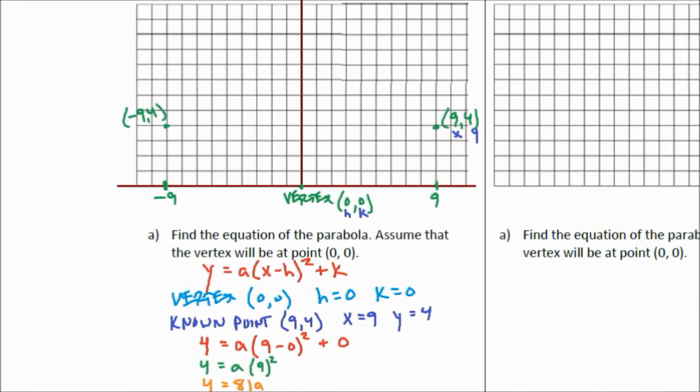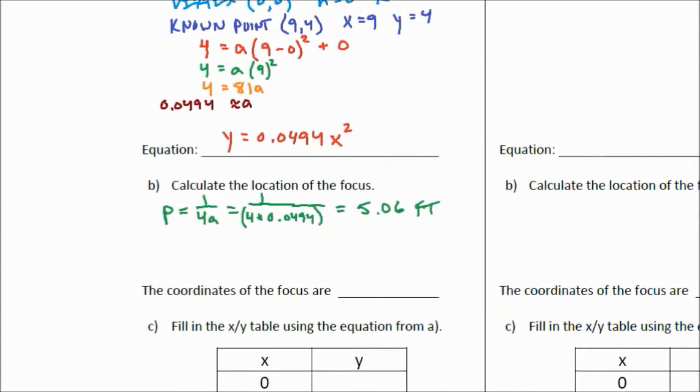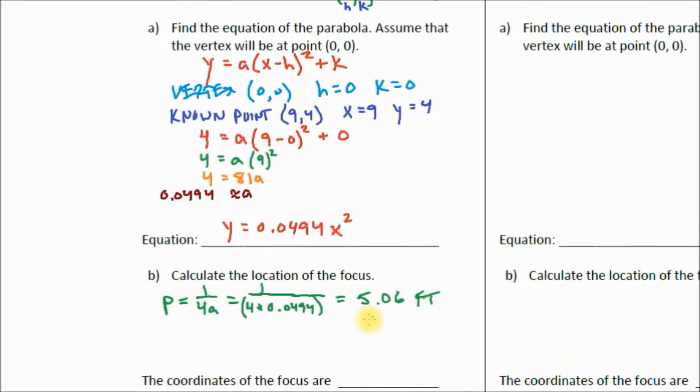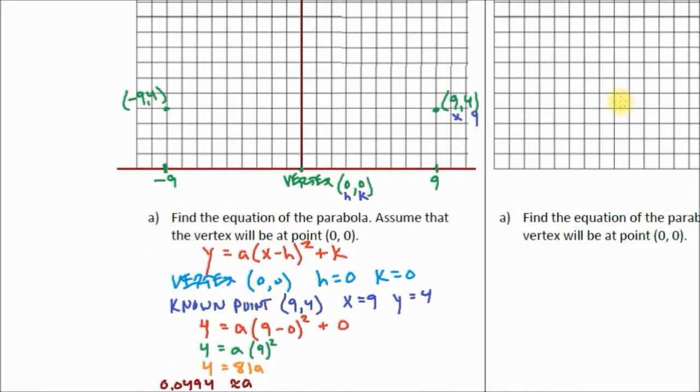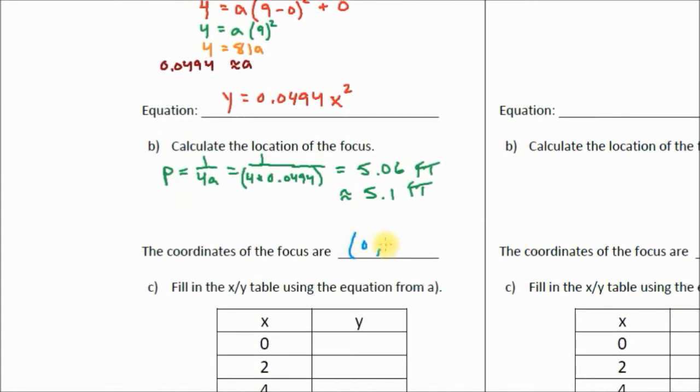So our P value is 5.06. And let's take a look. That is in feet. Our unit of measure is in feet. So 5.06 feet. So therefore, the coordinates of the focus are going to be, well, we know the focus is going to be above the vertex. Let's plot it first. 5.06 feet. I can round that to 5.1 feet to make it easier to graph. I will label this as my focus, which is at 0, 5.1.